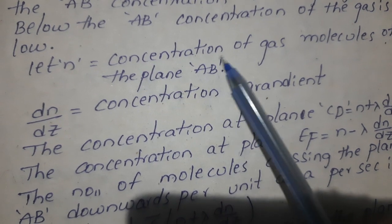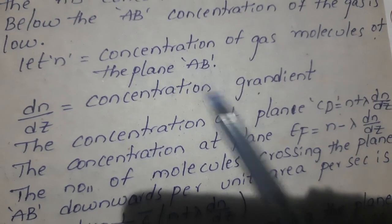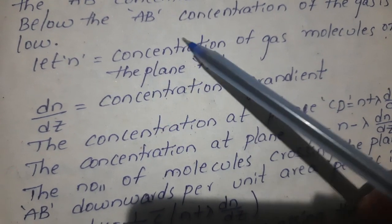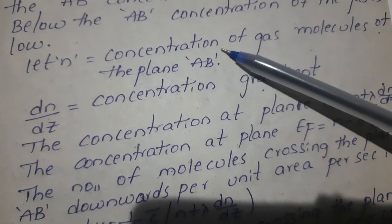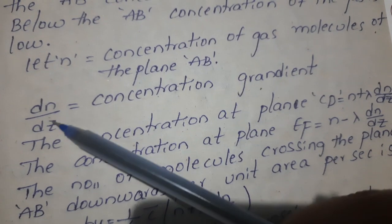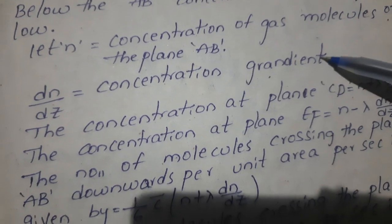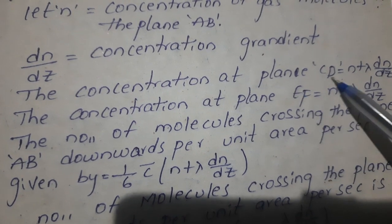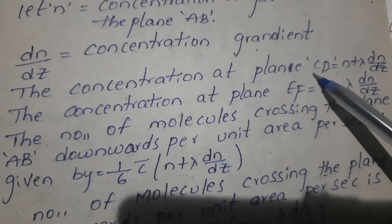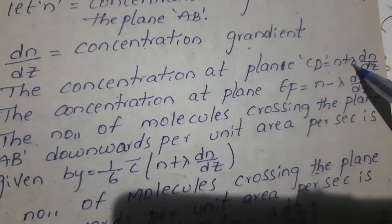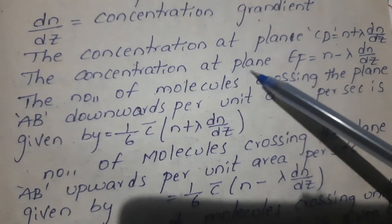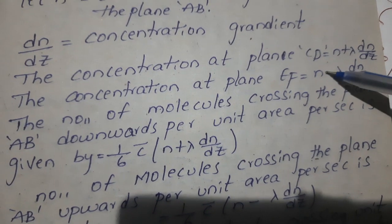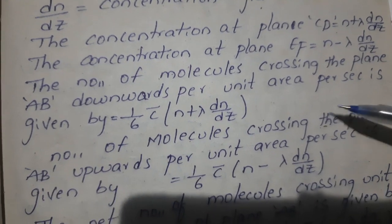n equals the concentration of gas molecules at the plane AB. dn by dz is the concentration gradient. The concentration at plane CD equals n plus lambda times dn by dz. The concentration at plane EF equals n minus lambda times dn by dz.